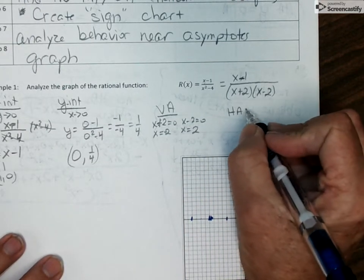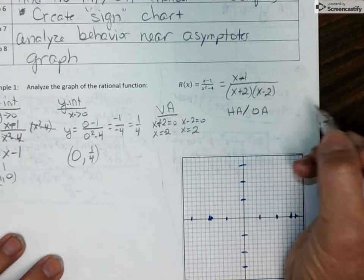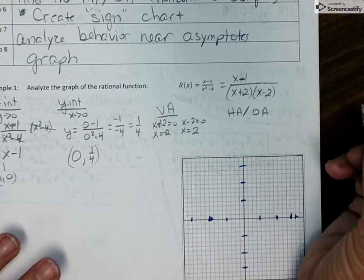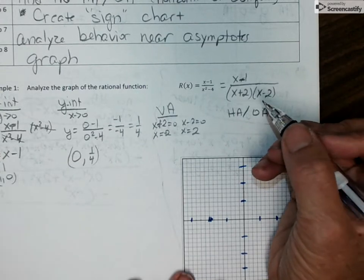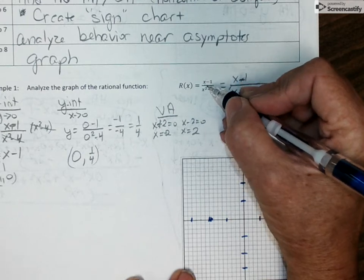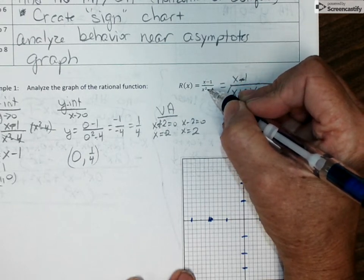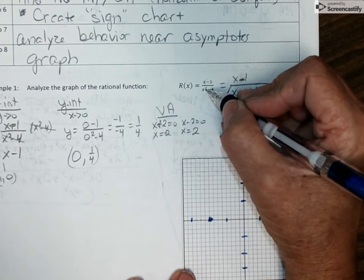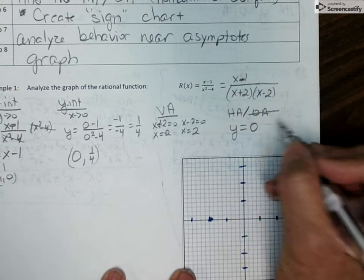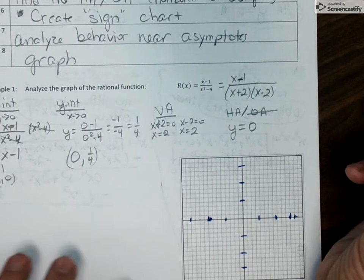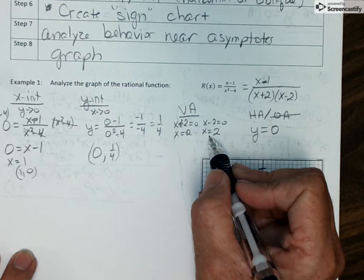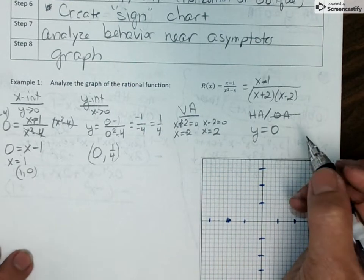Now for horizontal asymptotes versus oblique asymptotes, remember the way we discover this is we have to compare the degree of the numerator with the degree of the denominator. So my numerator, the degree is 1, the denominator, the degree is 2. So it's larger degree on the bottom. That tells me I've got a horizontal asymptote, and it's located at y equals 0. So now we've got x-intercept, y-intercept, vertical asymptotes, and our horizontal asymptote. We are ready to do step 6, which is creating a sign chart.